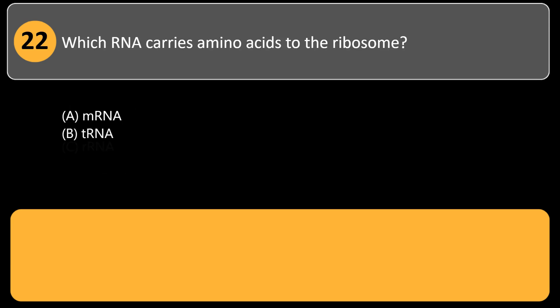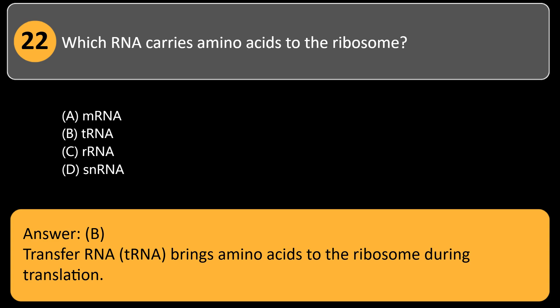Which RNA carries amino acids to the ribosome? A. mRNA, B. tRNA, C. rRNA, D. snRNA. Answer: B. Transfer RNA (tRNA) brings amino acids to the ribosome during translation.